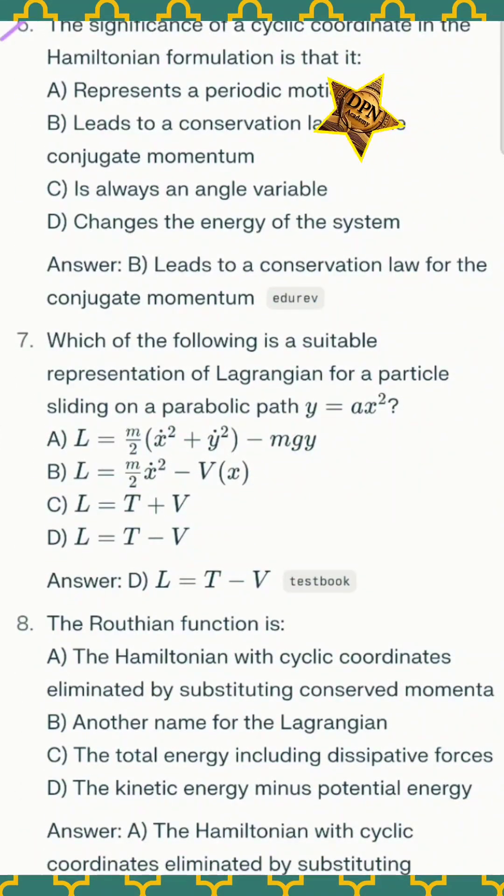Question number six: the significance of a cyclic coordinate in the Hamiltonian formulation is that - the correct option B, it leads to a conservation law for the conjugate momentum.